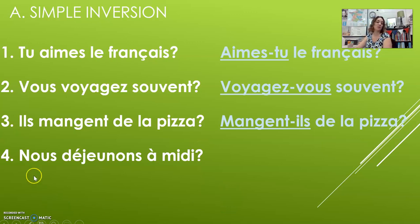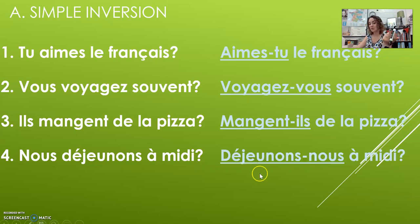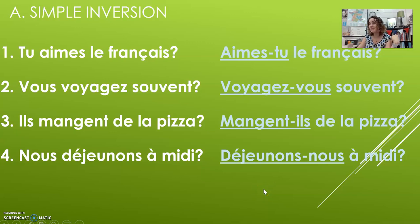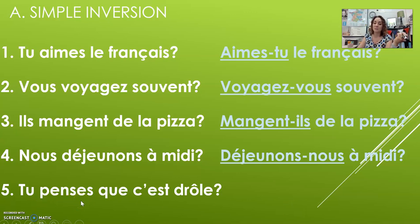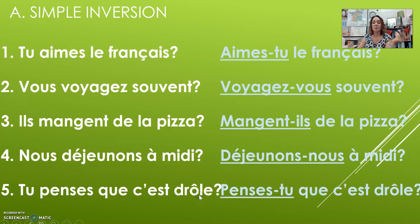Two more simple inversion examples. «Nous déjeunons à midi?» — are we having lunch at noon? Becomes «Déjeunons-nous à midi?» You won't see many questions with «nous» or «je» because you don't usually ask questions about yourself, but they exist. «Tu penses que c'est drôle?» — do you think that's funny? Remember, you're only flipping the subject and the verb; everything else stays in the same order. «Penses-tu que c'est drôle?»